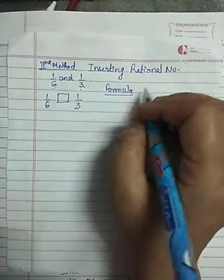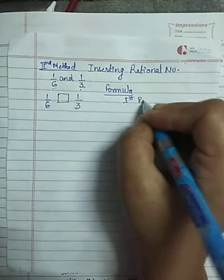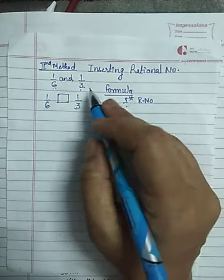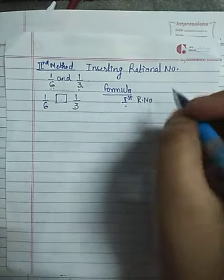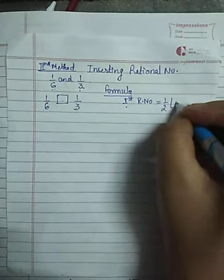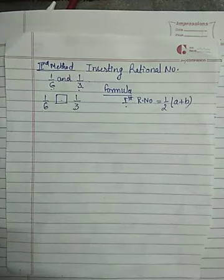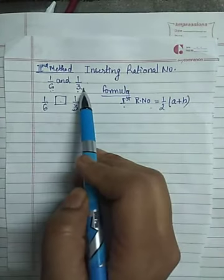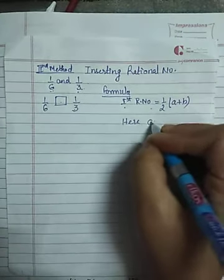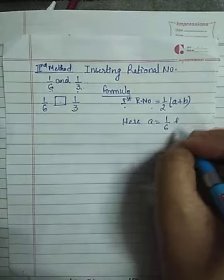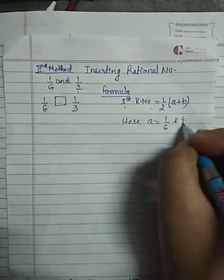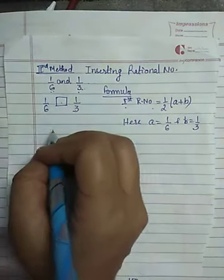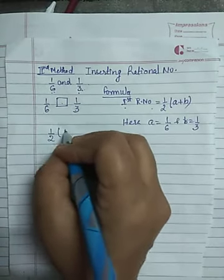To find the first rational number in between, the formula is: half of (a + b), where 'a' is the first rational number and 'b' is the second rational number. Here a = 1/6 and b = 1/3.